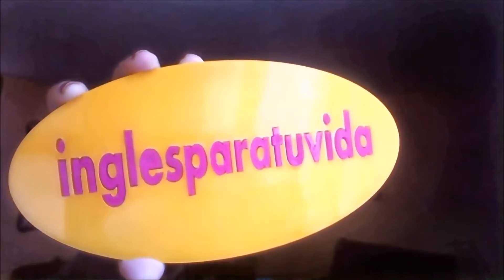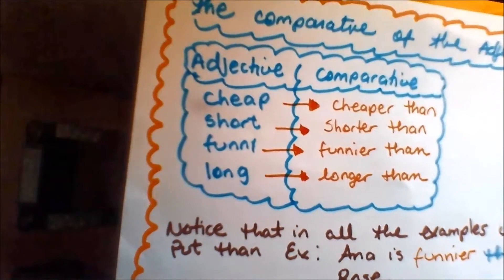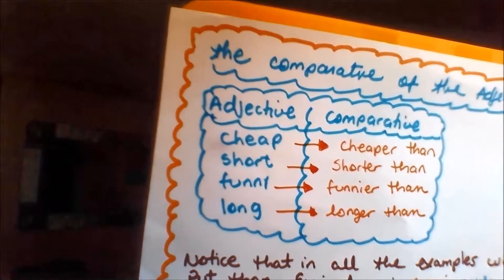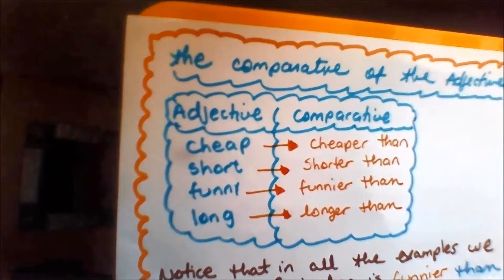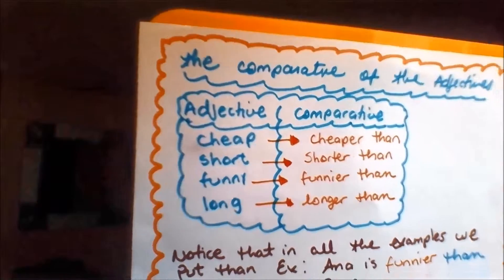In the class of today, we are going to learn a little bit about comparative in English. In English, we have adjectives, as you can see here. We have adjectives and these adjectives have comparative forms. For example,